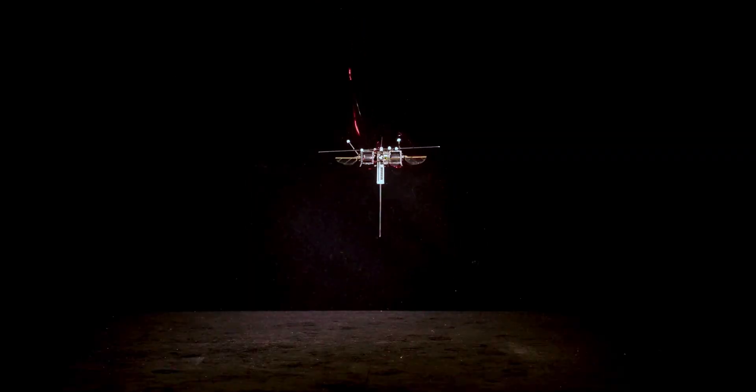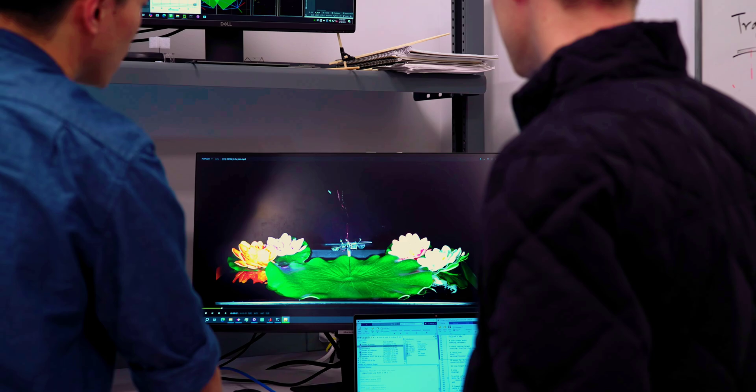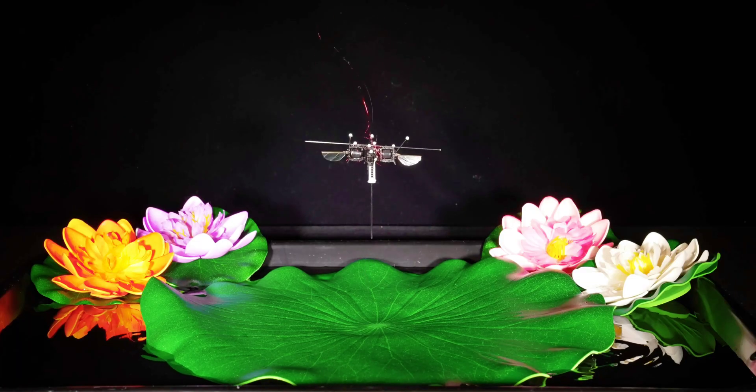The hopping robot, which is smaller than a human thumb and weighs less than a paperclip, has a springy leg that propels it off the ground, and four flapping wing modules that give it lift and control its orientation.